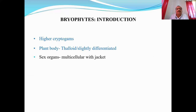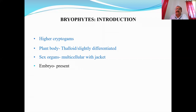That is another characteristic feature of higher cryptogames, to which bryophytes also belong. Another character is that the embryo phase is always present in the life cycle of higher cryptogames. The zygote after its formation divides and re-divides by mitotic cell divisions, forming a multicellular structure called an embryo, which then gives rise to the new plant body. Higher cryptogames are of two types: bryophytes and pteridophytes. Here we are discussing about bryophytes.